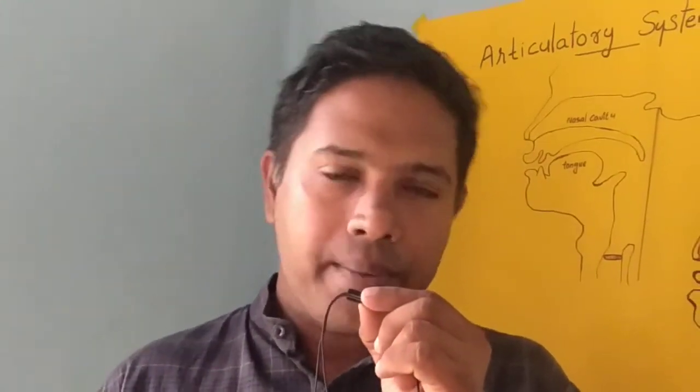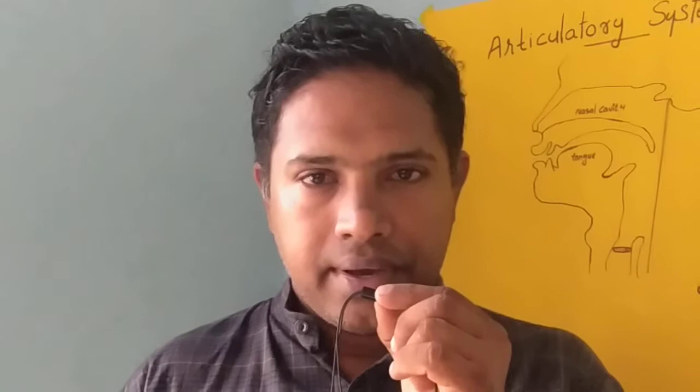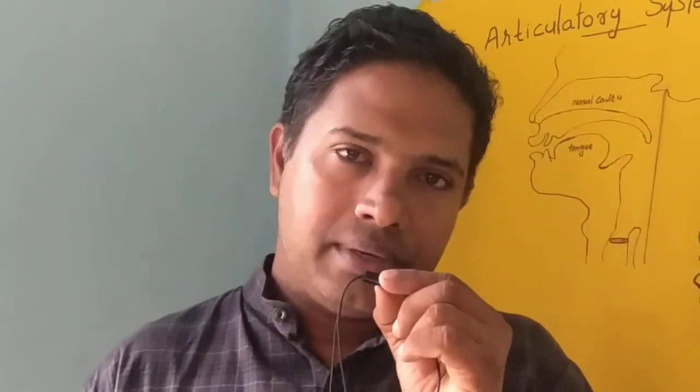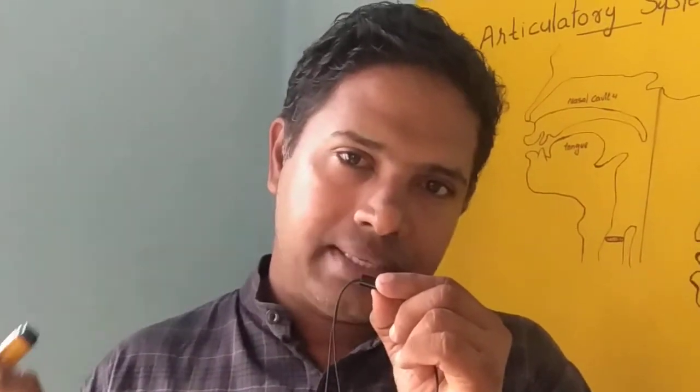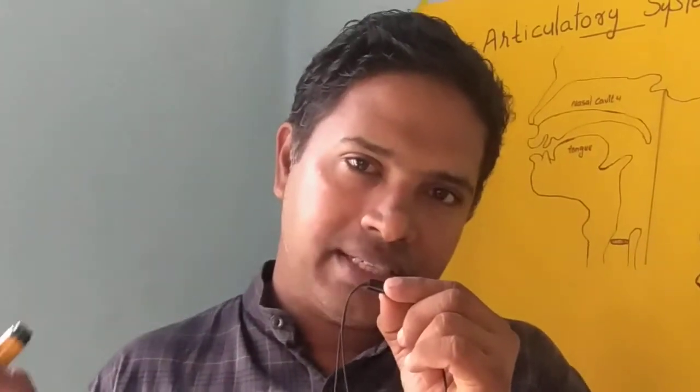Now we're going to look at another organ — the tongue. Biologically, the tongue has not been divided, but for the sake of convenience the tongue has been classified into five parts: the tip, the blade, the front, the back, and the root.